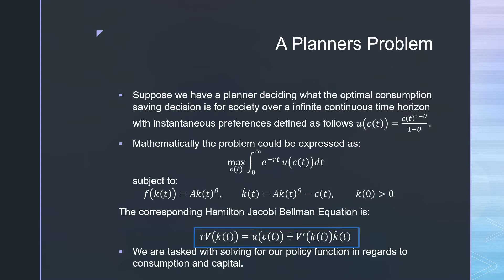subject to standard production technology. We have a law of motion where this law of motion does not contain capital depreciation. Mathematically speaking, the corresponding Hamilton-Jacobi-Bellman equation is the same as we've seen before. We're tasked with solving for the policy functions with regards to consumption and capital.